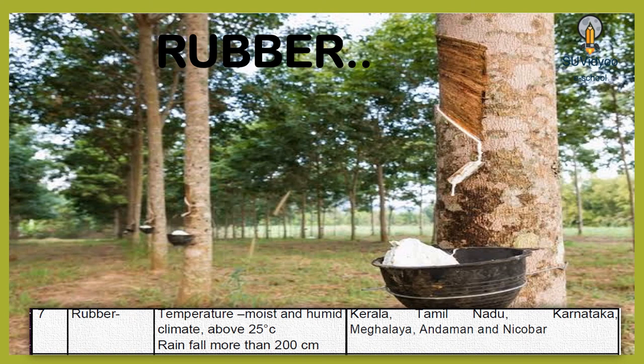Rubber is an equatorial crop. It requires temperature above 25 degrees Celsius and moist and humid climate, with rainfall more than 200 cm. Rubber is grown in India in Kerala, Tamil Nadu, Karnataka, Meghalaya, and Andaman and Nicobar.